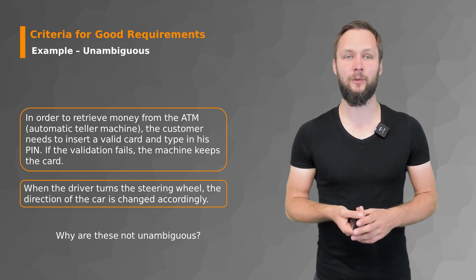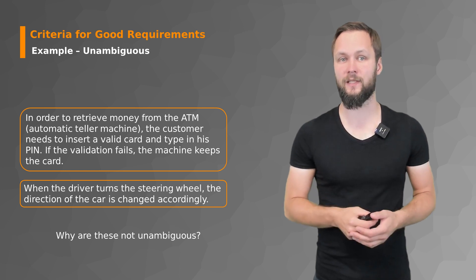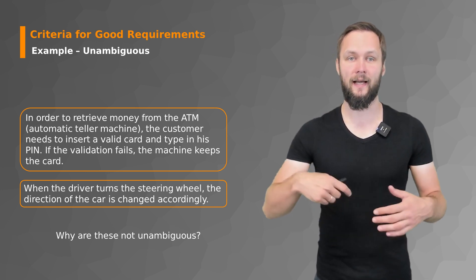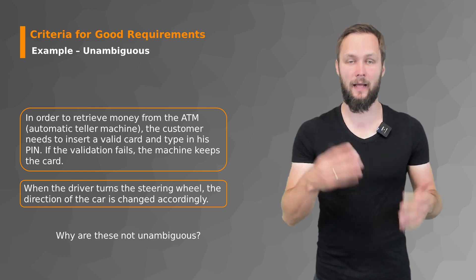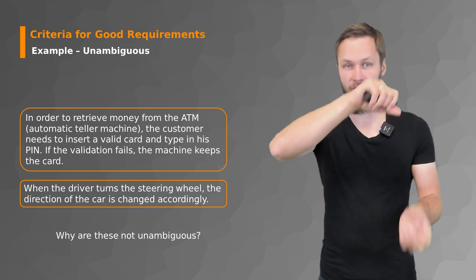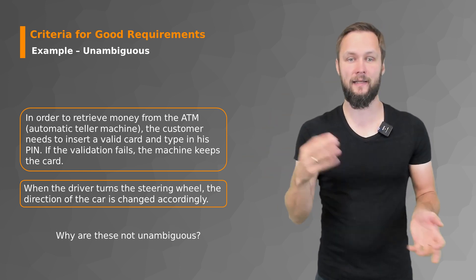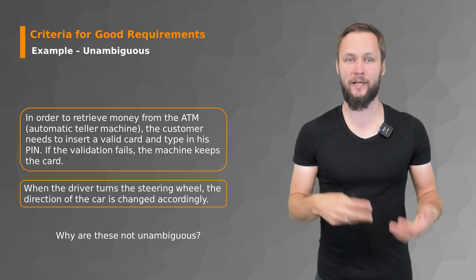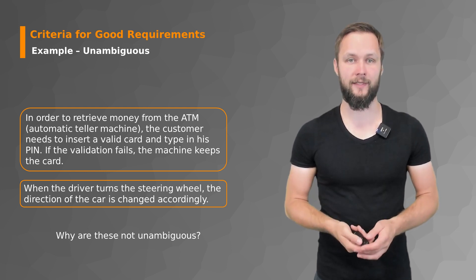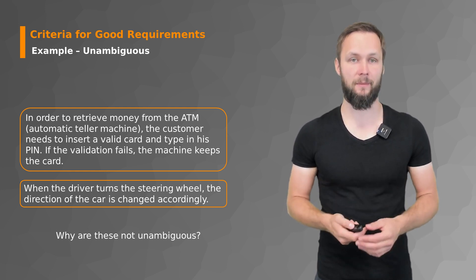The same issue applies to the steering wheel example: 'When the driver turns the steering wheel, the direction of the car is changed accordingly.' But does one turn of the steering wheel mean that the wheel rotates completely? Direction and other information are not delivered in an unambiguous manner, so something is missing.